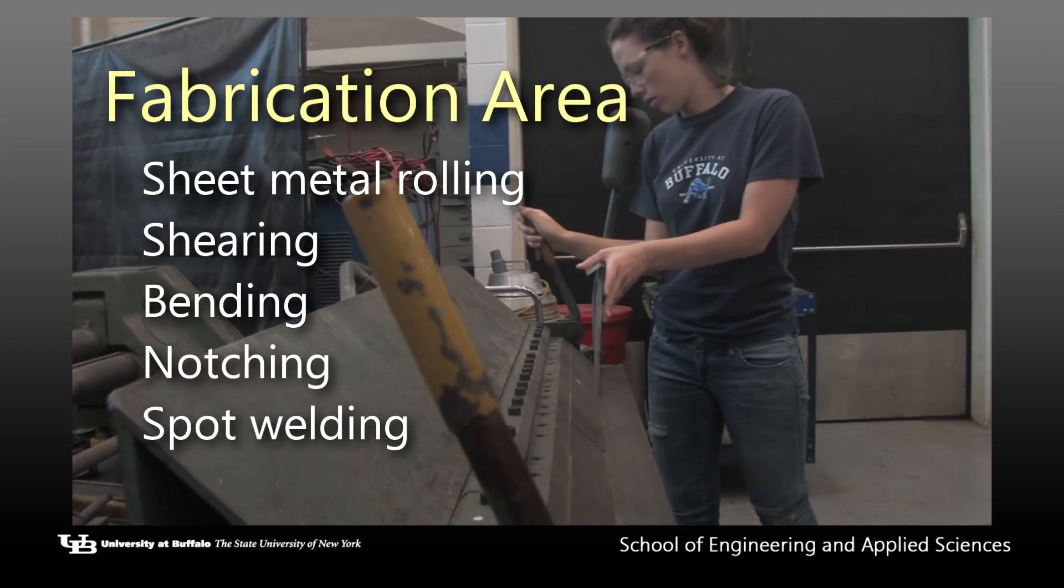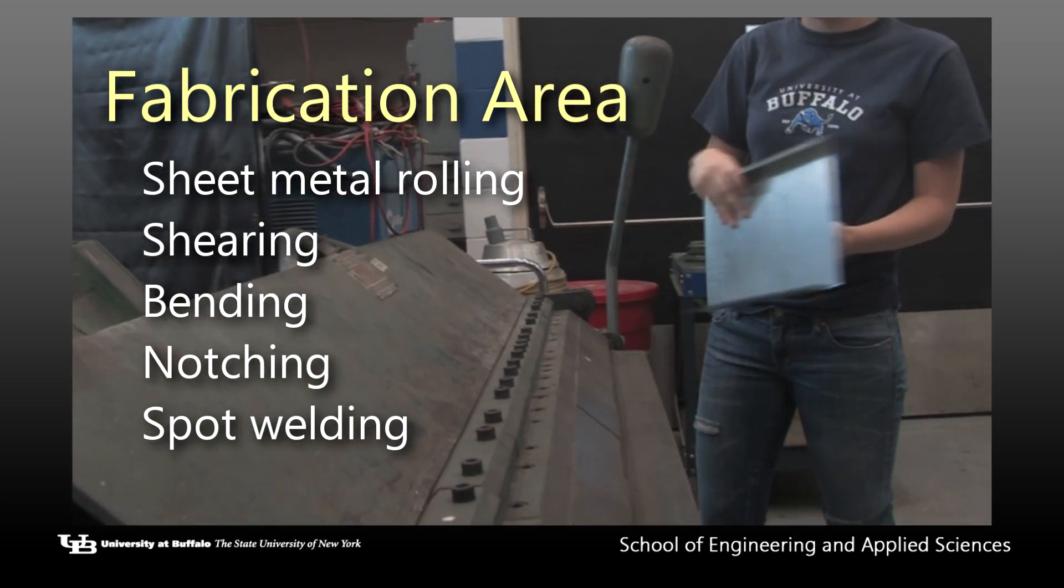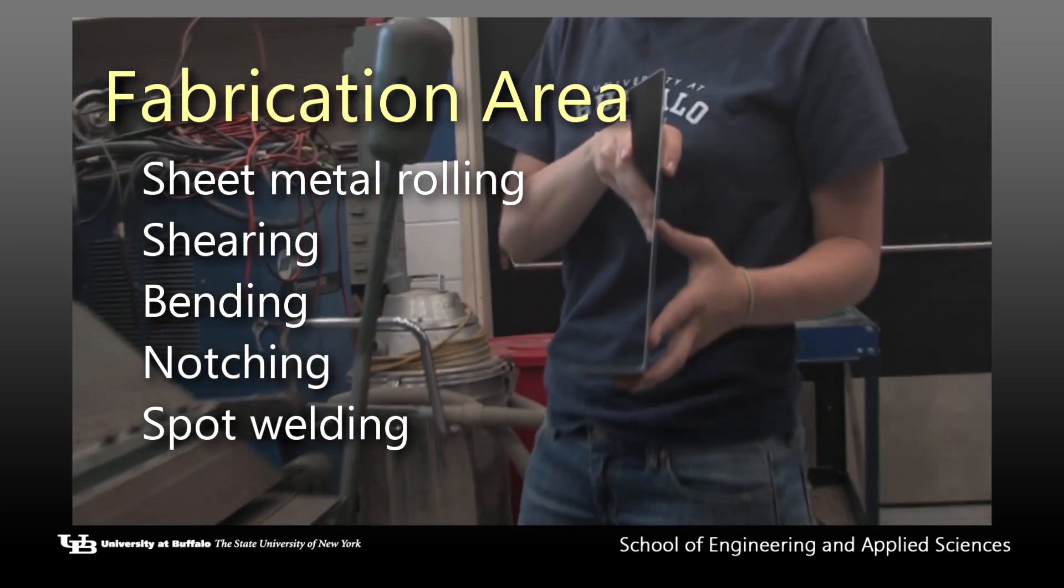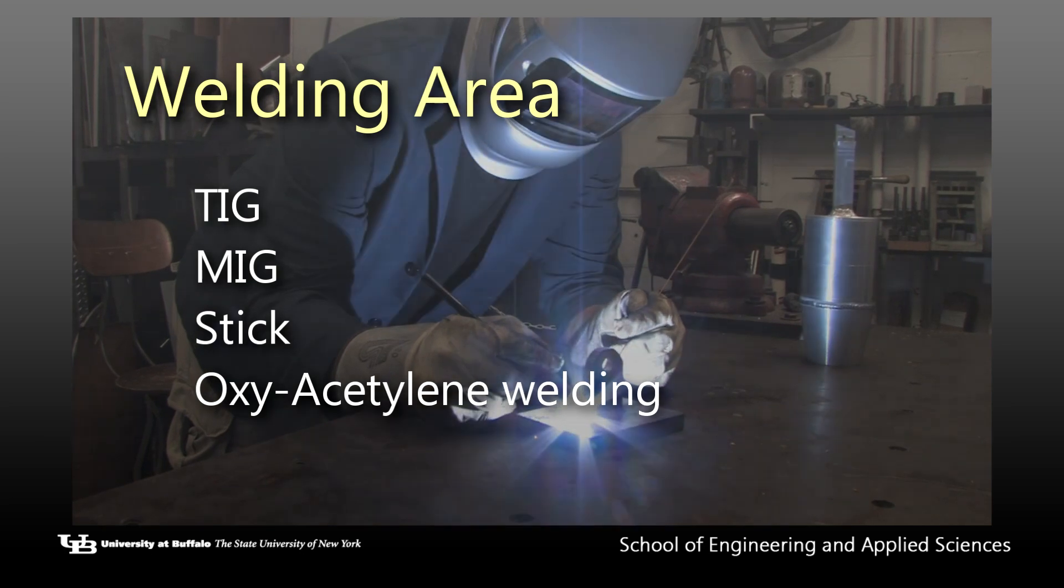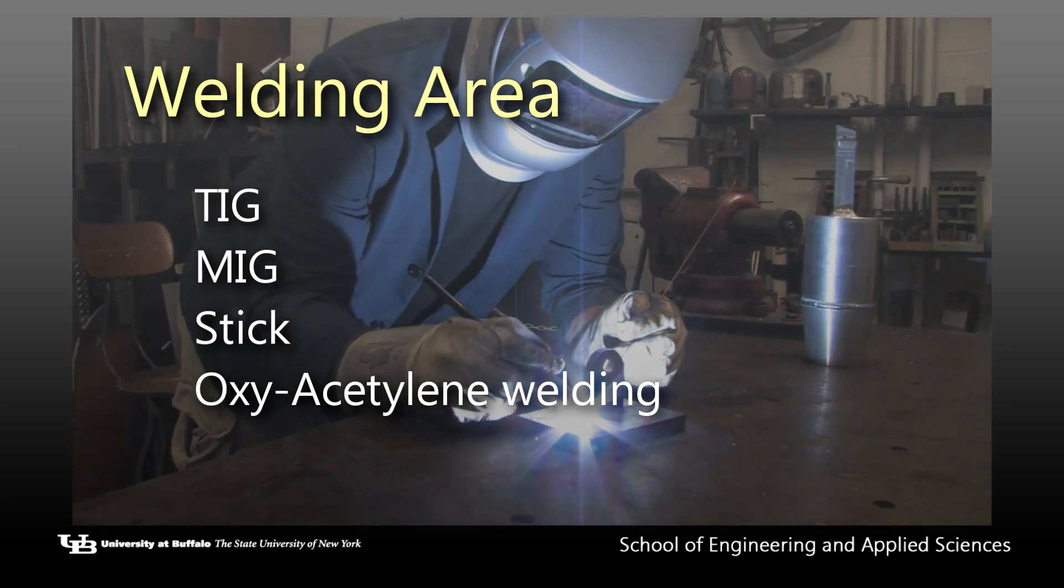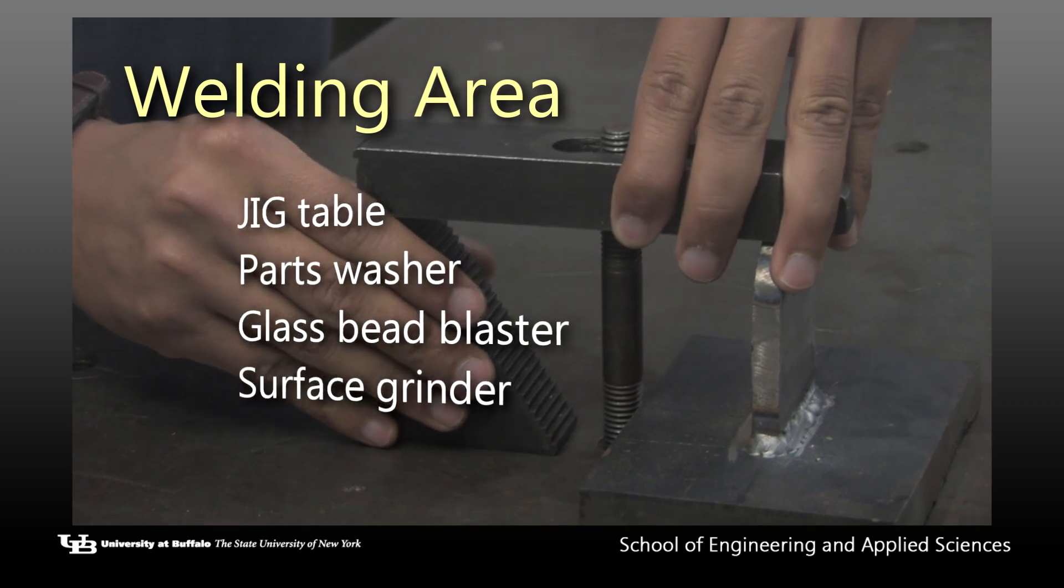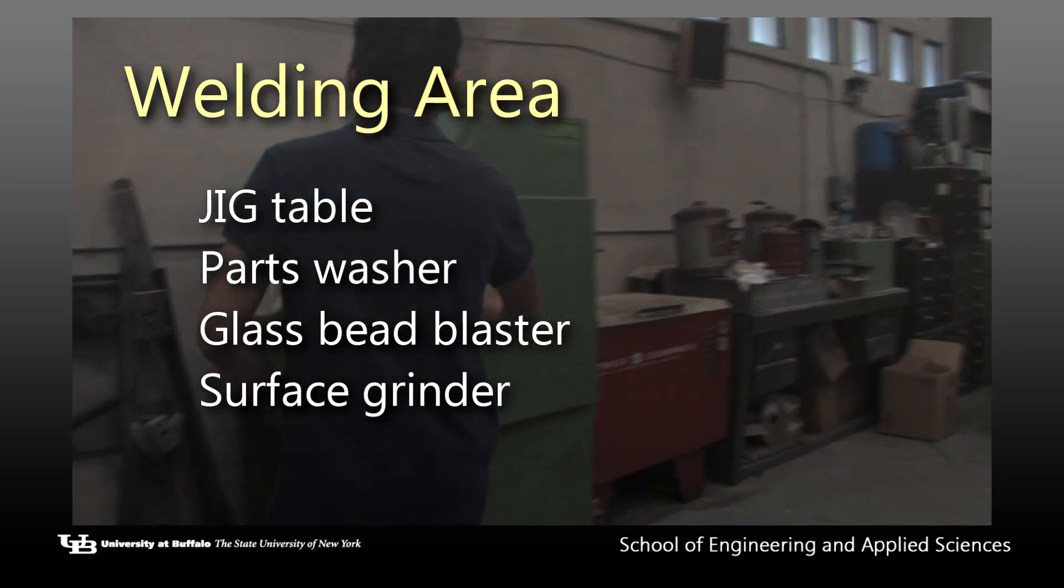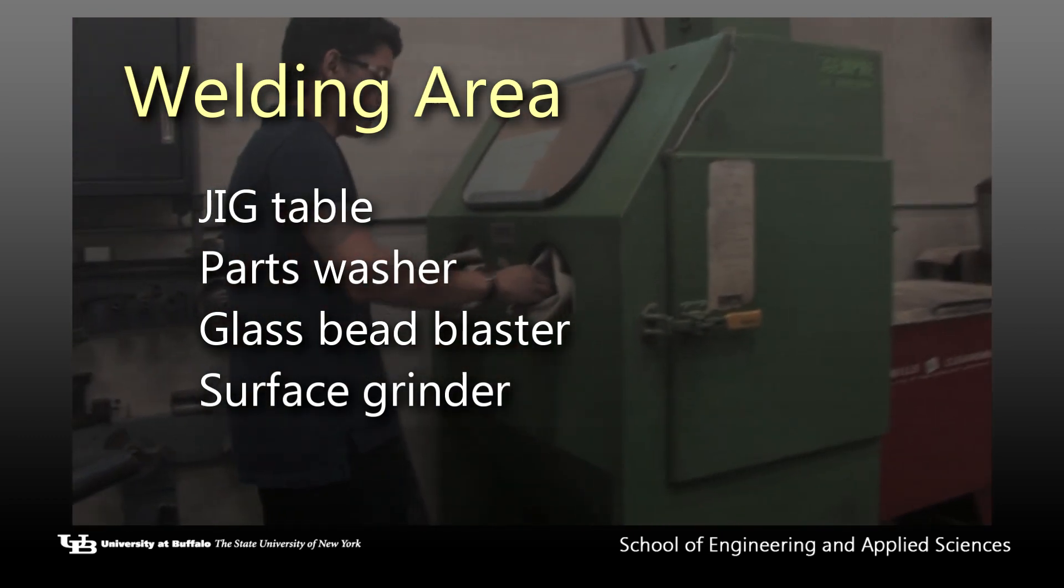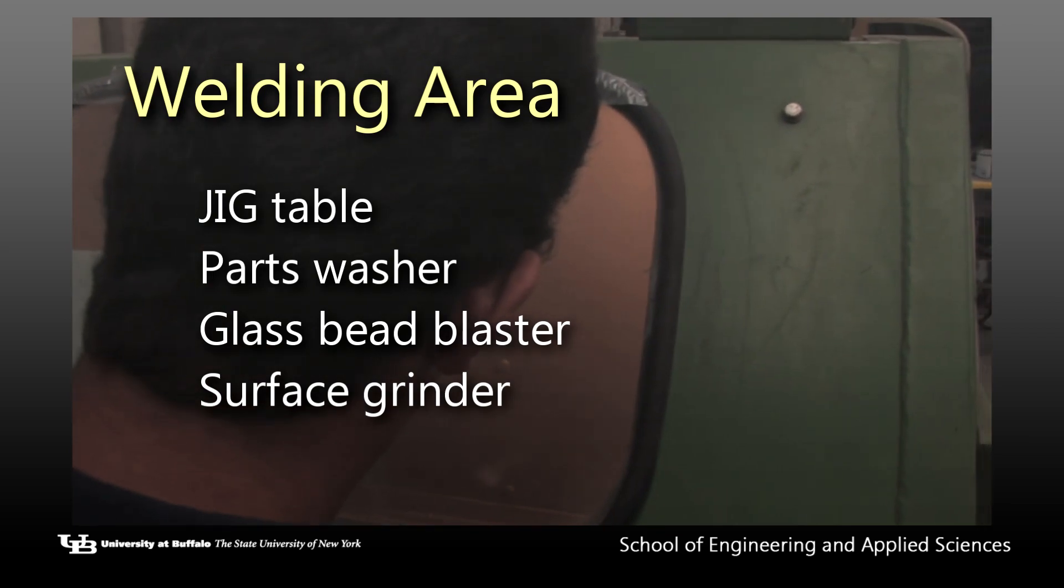The fabrication area has equipment that allows you to perform sheet metal rolling, shearing, bending, notching, and spot welding. Welding area capabilities include TIG, MIG, STICK, and oxy-acetylene welding. There is a jig table for clamping structures prior to welding, a parts washer for degreasing, a glass bead blaster for metal prep and cleanup, and a surface grinder for precision grinding of ferrous metals.